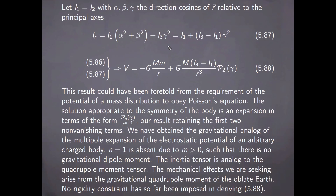Consider now that the body is symmetrical about the figure axis, and that alpha, beta, and gamma represent the direction cosines of the radius vector between the center of mass and the Sun relative to the principal axes. Then right away we can write the moment of inertia for rotation about this axis in the given form, and using the fact that the sum of squares of these direction cosines equals one, we can recast things in this form. Bringing this into Mekulag's formula, we obtain a representation of the potential in terms of the monopole and quadrupole terms.